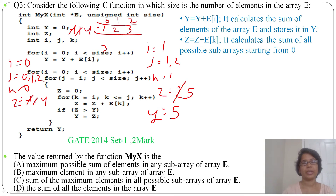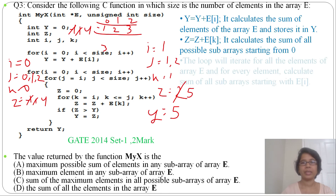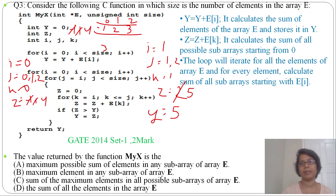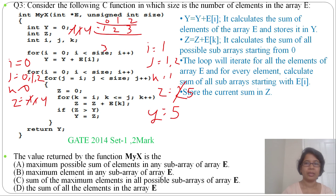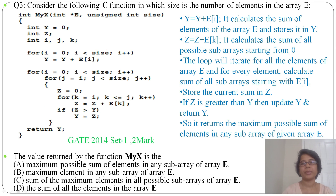In the same way you can run for i equal to two with any array size. The loop iterates for all elements of the array, and for every element calculates the sum of all sub-arrays starting with e[i], storing the current value in z. If z is greater than y, it updates y and returns it. So the function returns the maximum possible sum of elements in any sub-array. The answer is A.